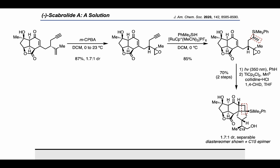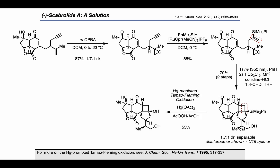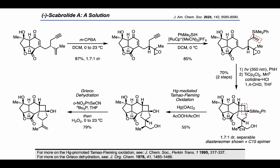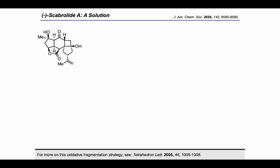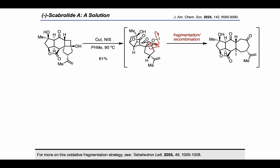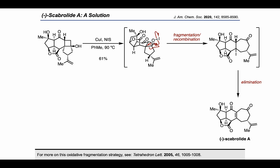In this next step, they found that using a mercury-mediated Tamao-Fleming oxidation, they could convert the silyl group into a hydroxyl group, which set up the cyclobutanol for the key fragmentation step. But first, to converge their epimers and get rid of the primary alcohol, they used a Grieco dehydration, which gave back the terminal alkene. To do the key fragmentation step, they found that copper iodide and N-iodosuccinimide triggered a radical fragmentation and recombination that resulted in cleavage of the cyclobutane ring and expansion to the cycloheptanone. Finally, beta-elimination of iodine was used to arrive at scabrolide A.